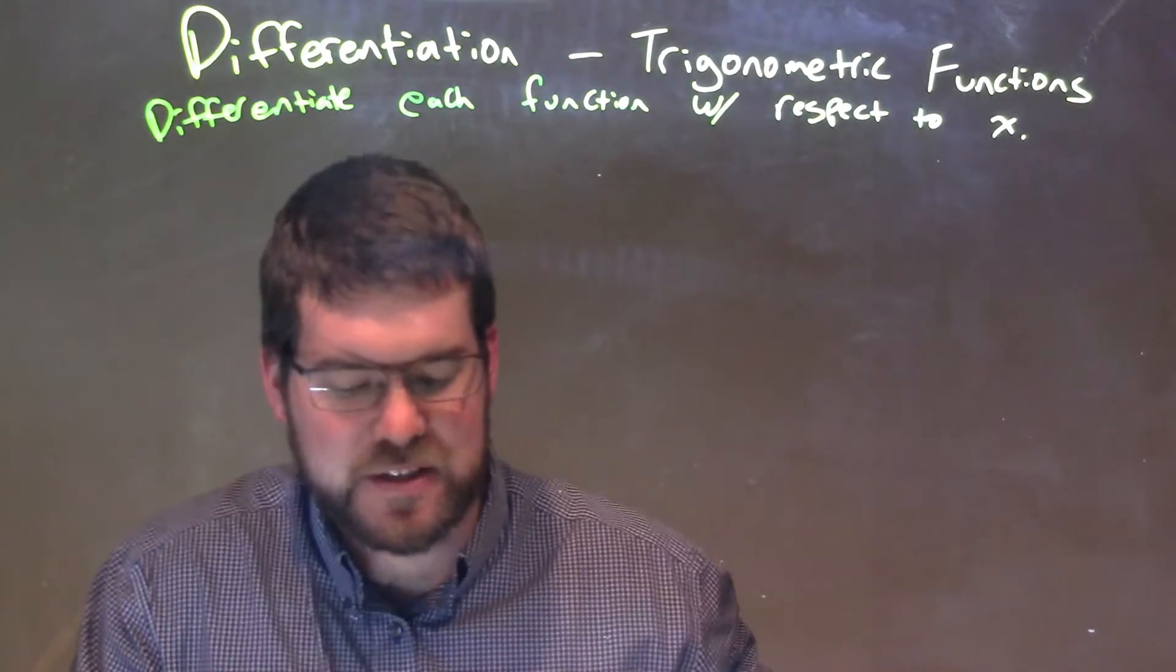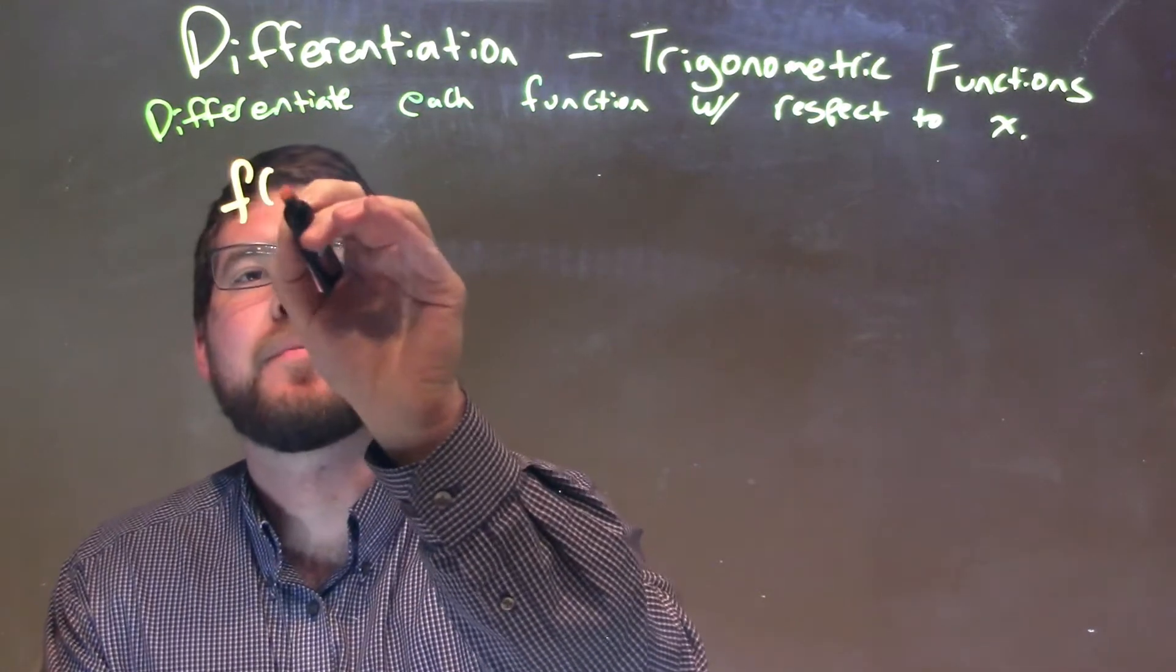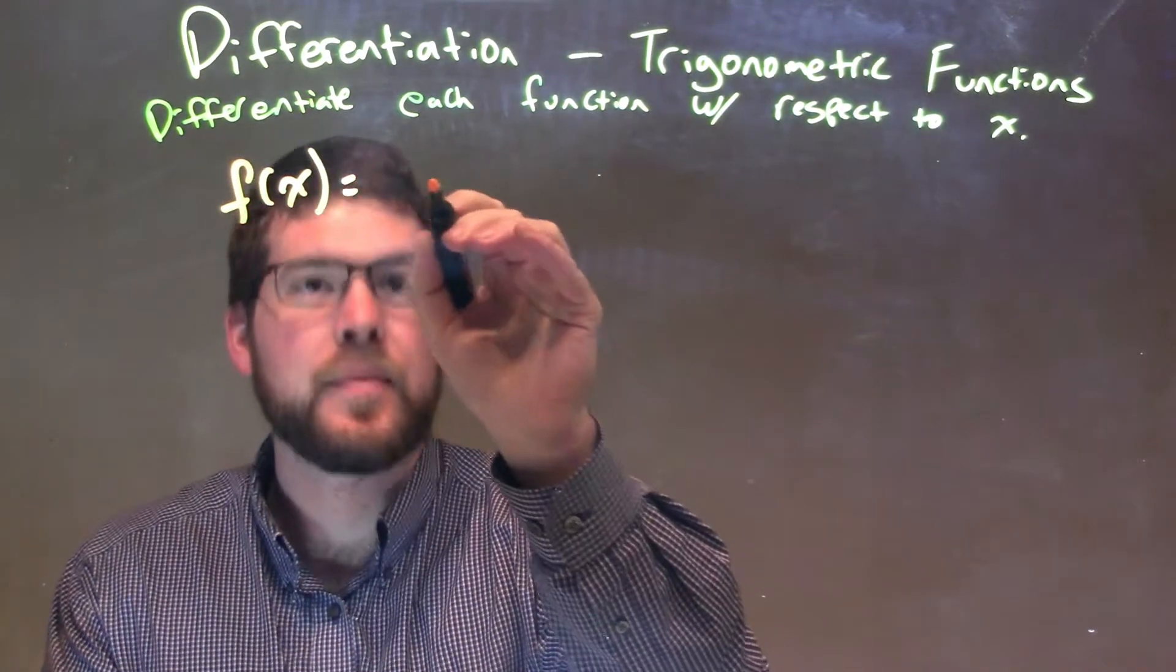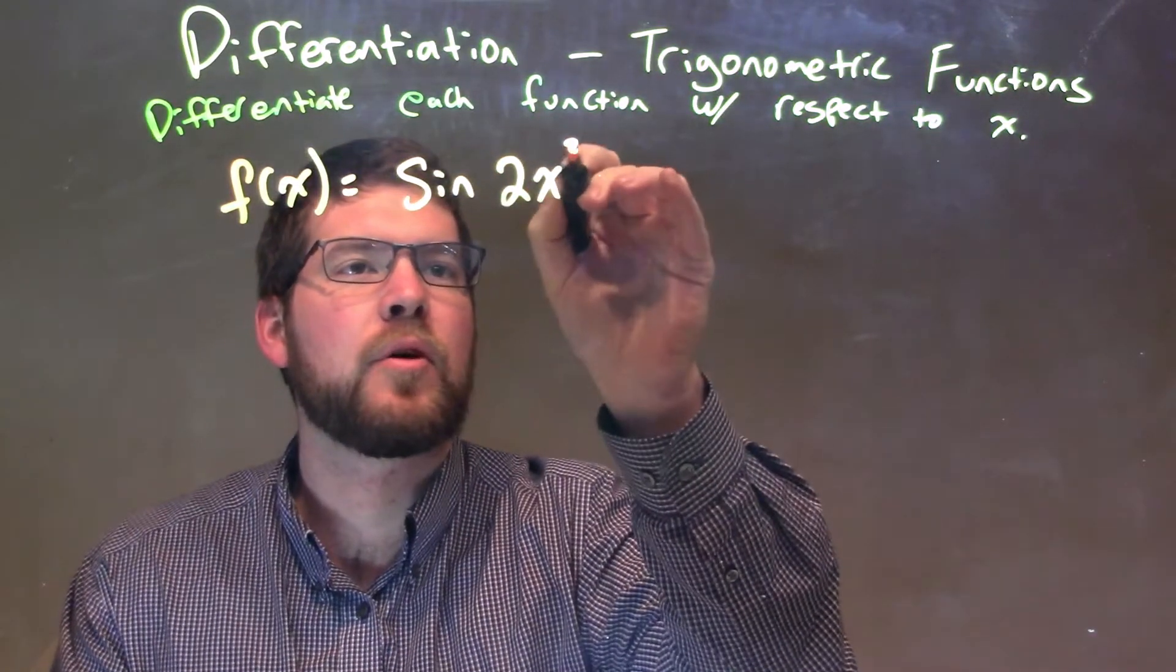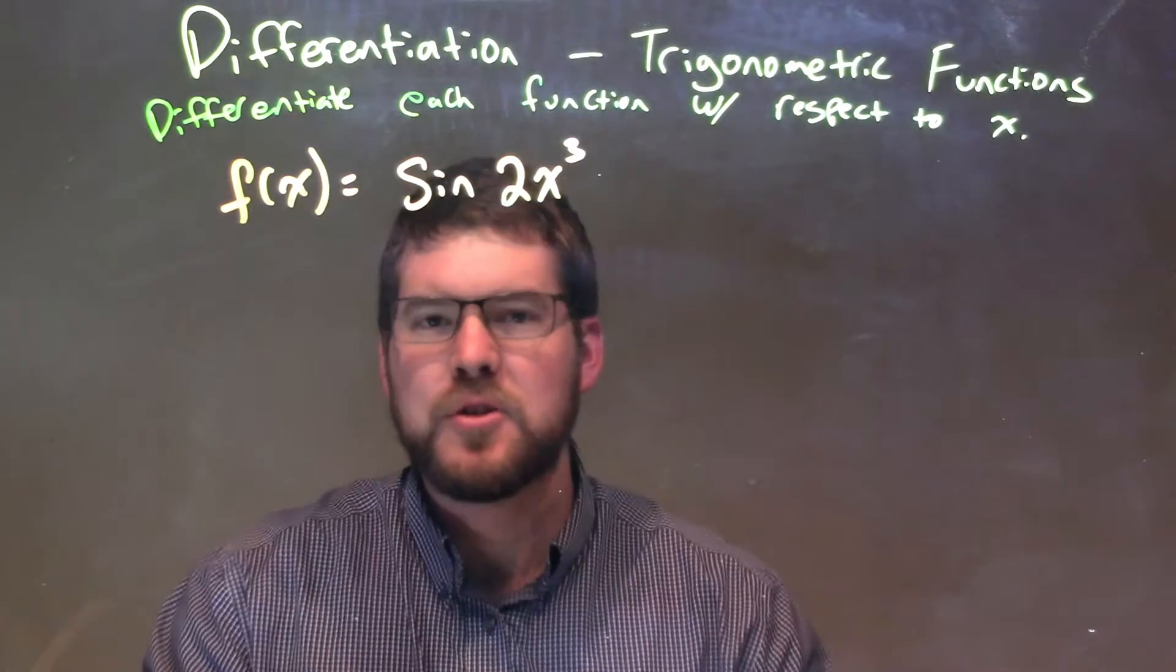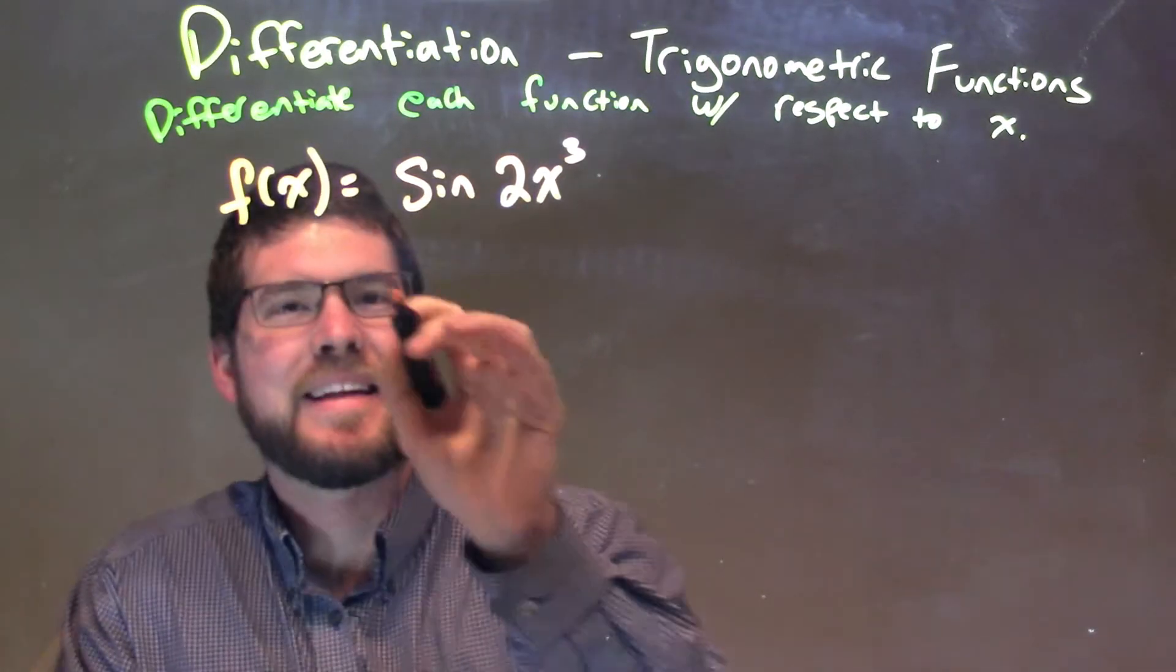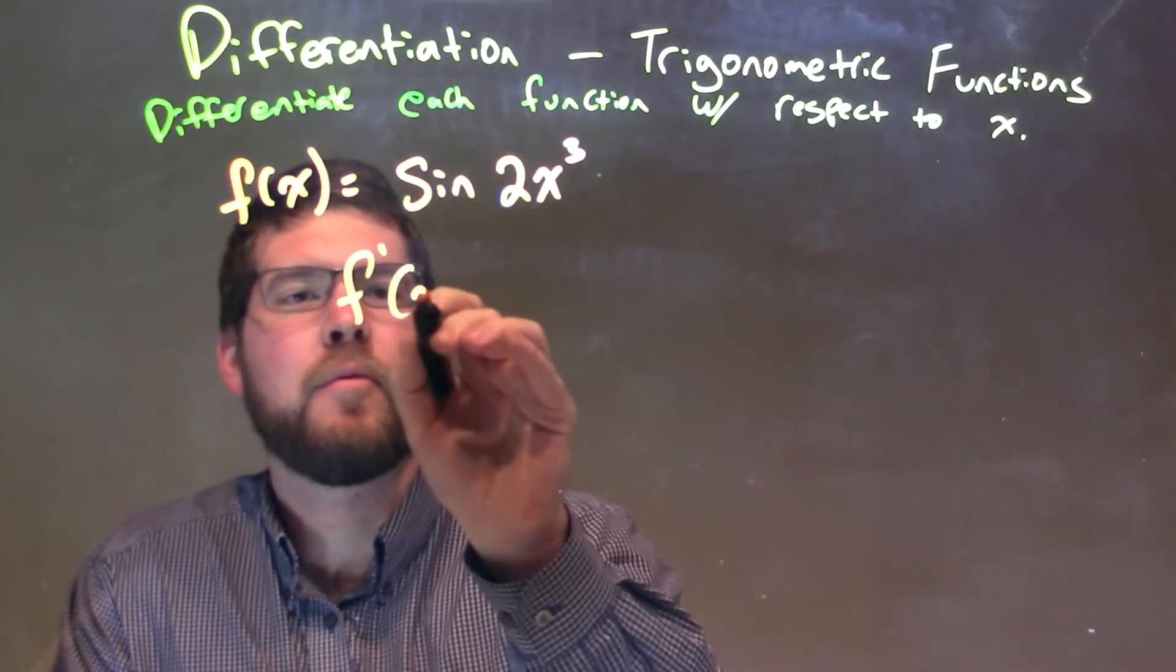So, if I was given this function here, f of x is equal to the sine of 2x to the third power. Okay, now we're taking the sine of 2x to the third power. So, if I want to take that derivative, find that derivative, f prime of x.